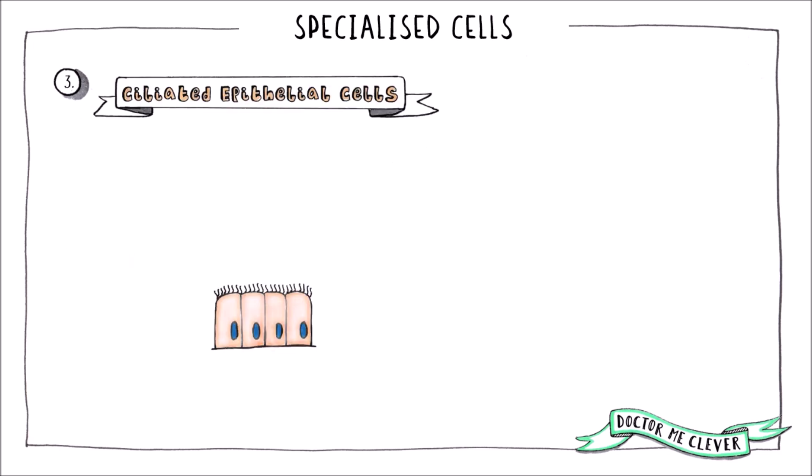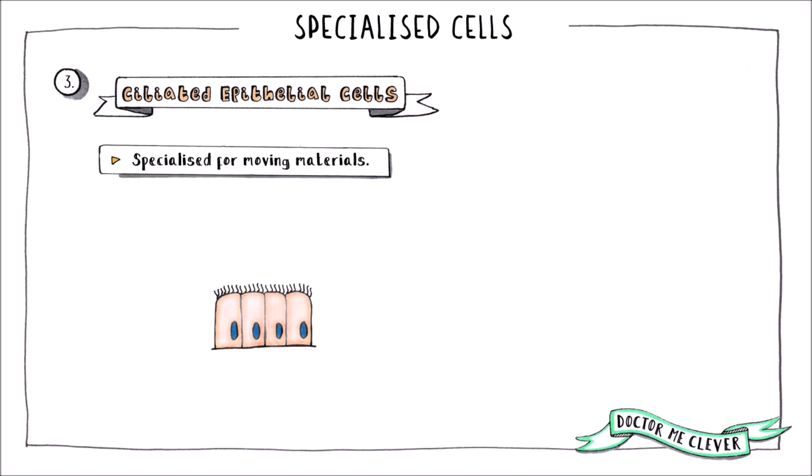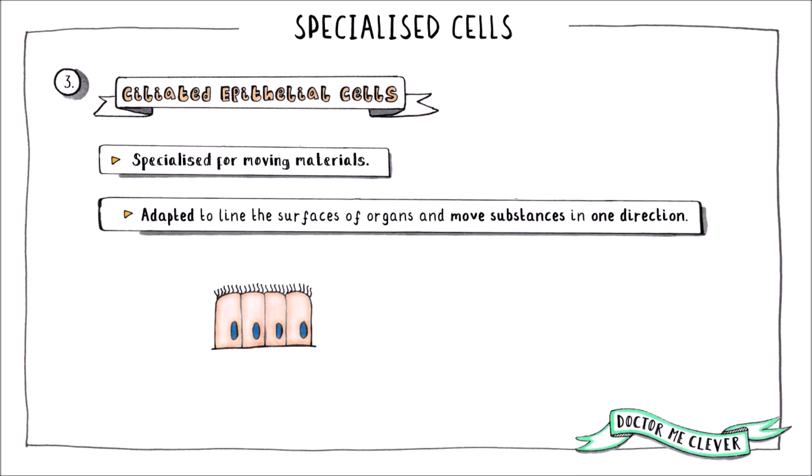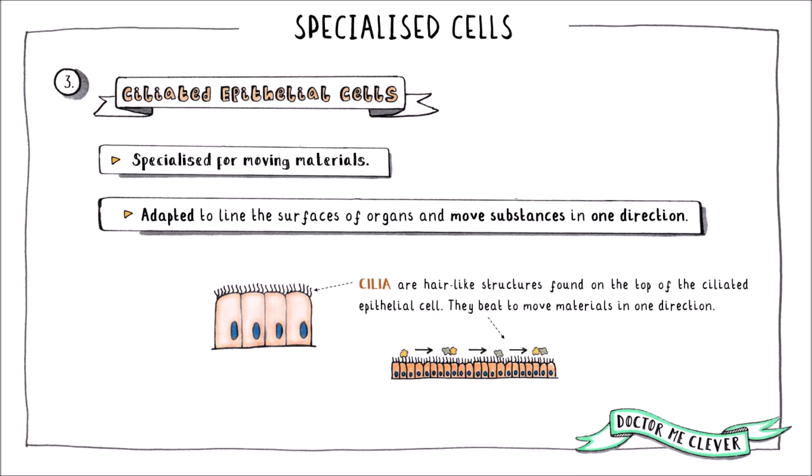The last cell type you need to know about in detail is the ciliated epithelial cell. This is specialised for moving materials and is adapted to line the surfaces of organs, moving substances across them in one direction. The crucial feature that allows this cell type to carry out its function is the cilia. These are found on top of the cells and are hair-like structures that carry whatever is on the surface of these cells along in a single direction.